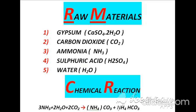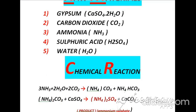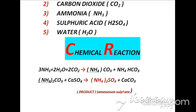According to raw materials, gypsum, carbon dioxide, ammonia, sulfuric acid, and water are involved in the manufacturing of Ammonium Sulphate.